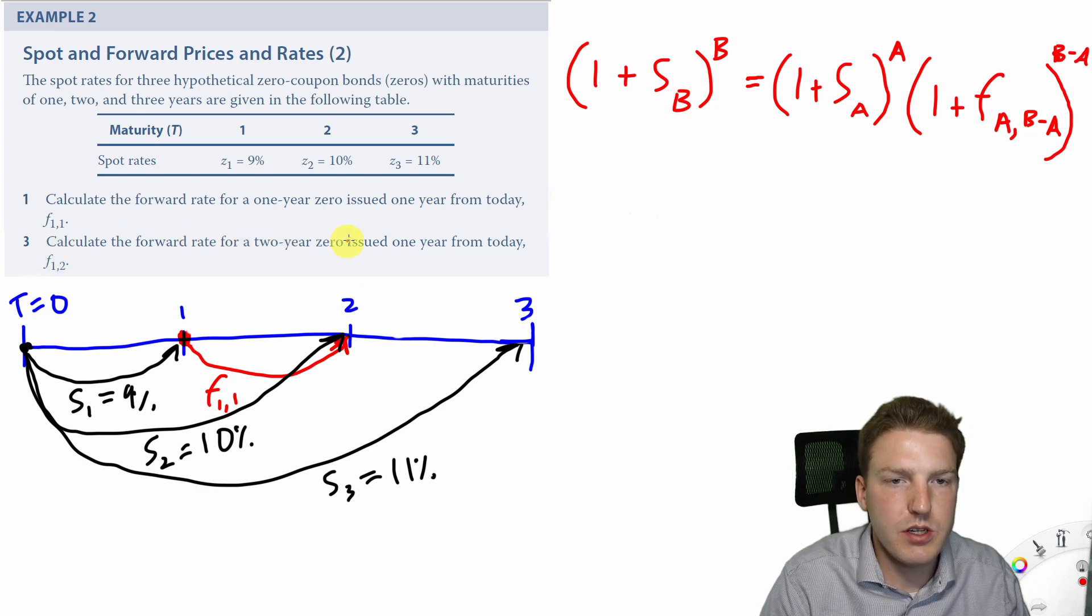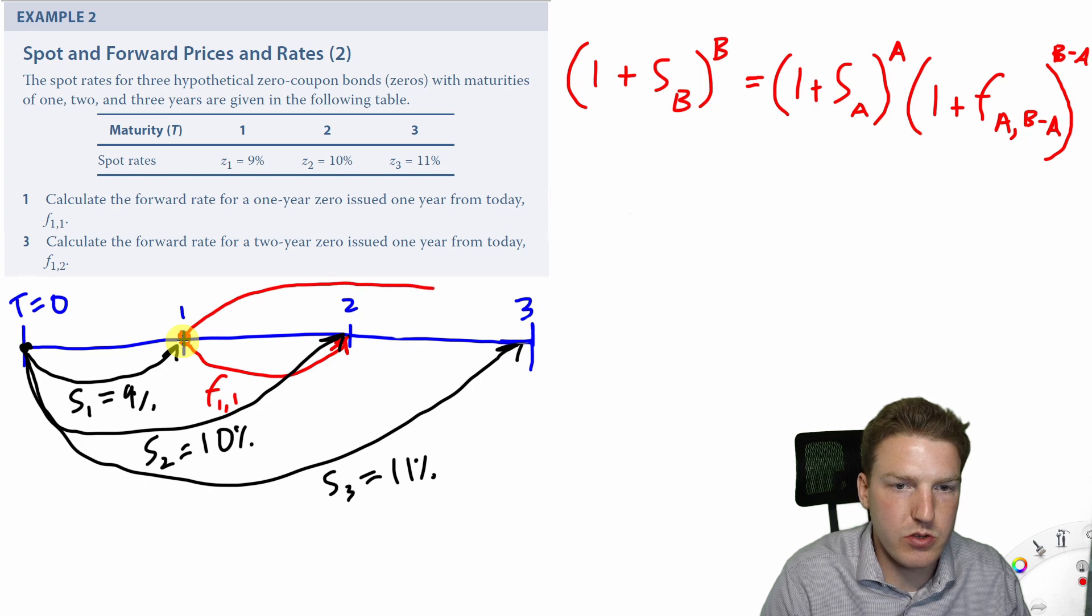Problem 3 states, calculate the forward rate for a 2 year 0 issued 1 year from today. So same as the last example, we're starting at 1 year, but this time it's a 2 year 0, which extends all the way to period 3. And we can call this F1, 2.